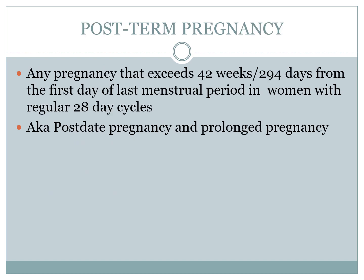By definition, post-term is any pregnancy that exceeds 42 weeks, or two weeks beyond the due date — 294 days from the first day of the last menstrual period in women with regular 28-day cycles. It could also be termed post-date pregnancy or prolonged pregnancy.